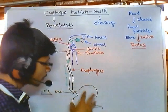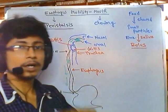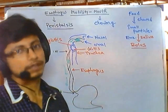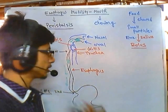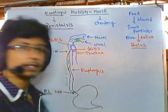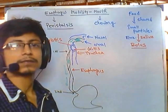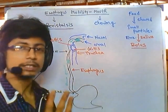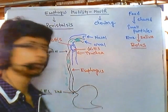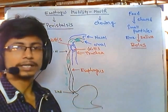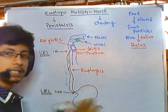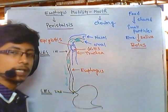Now when food is coming towards the stomach, the stomach needs to maintain three major functions: one is holding the food, second is mixing the food, and third is forwarding the food — that is, delivering the food particle into the next section of the digestive system.